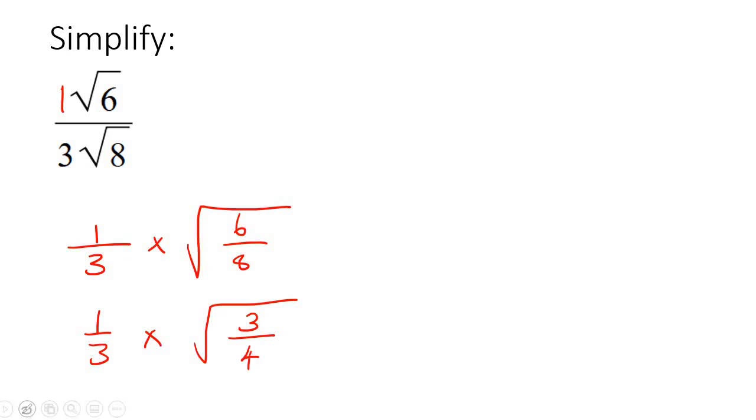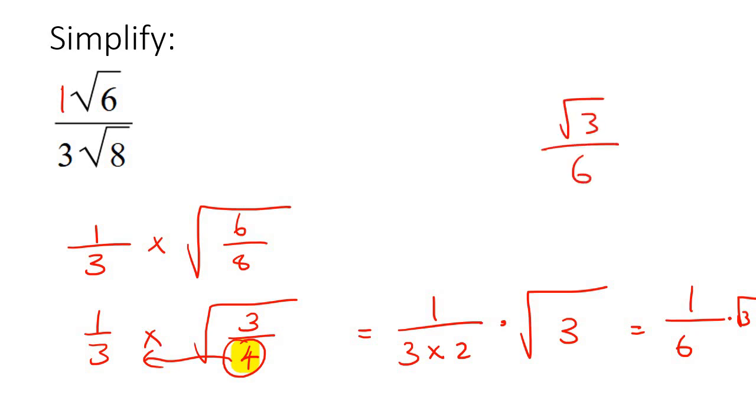The square root of four, which is this one, is two. So we can let that come out into the front, but because it's at the bottom it'll stay at the bottom, and then on the square root we'll just still be left with that three. And so if you had to simplify that, that'll be one over six, square root three. Now, you could also write that as square root three over six. Doesn't really matter.